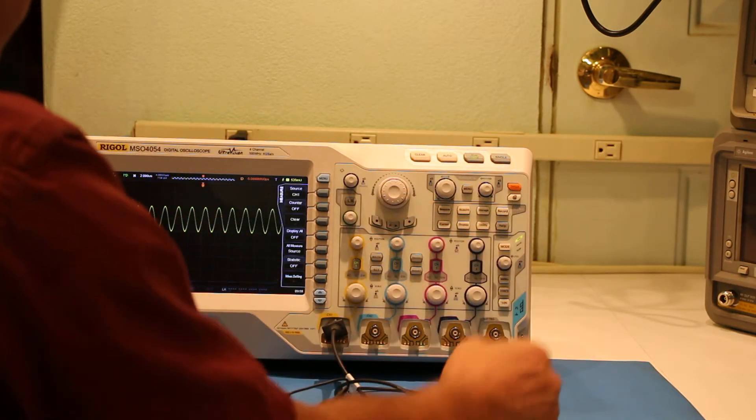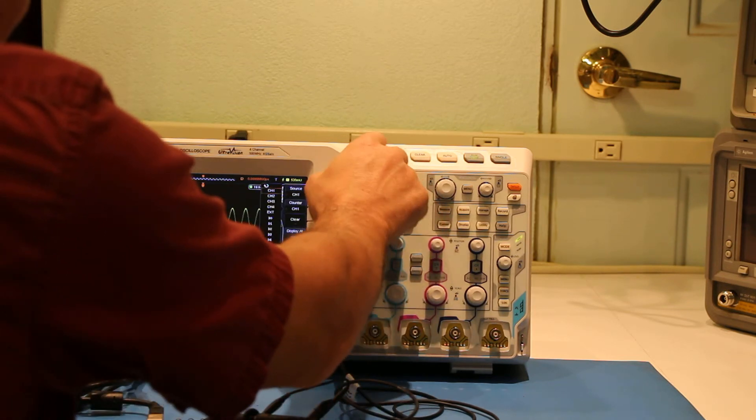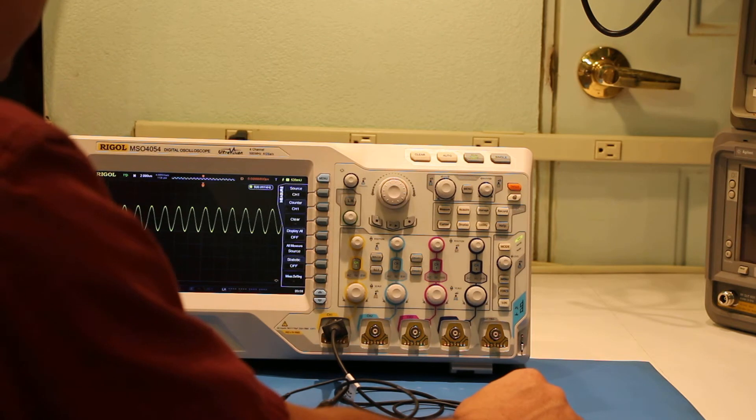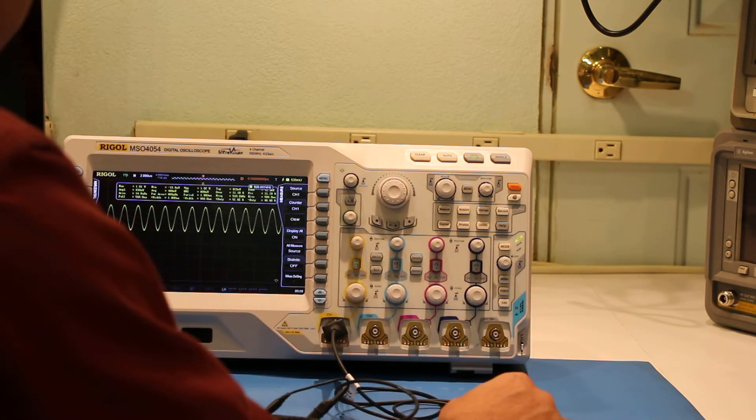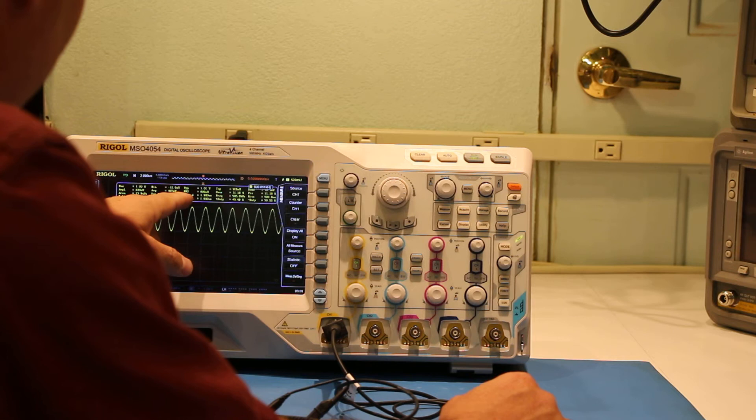We can push the measure button, push the counter, tell it which signal we want to count on, and it's saying it's about 500 kilohertz. We can also display everything as a snapshot, and we have about one volt maximum and peak-to-peak is 1.02.